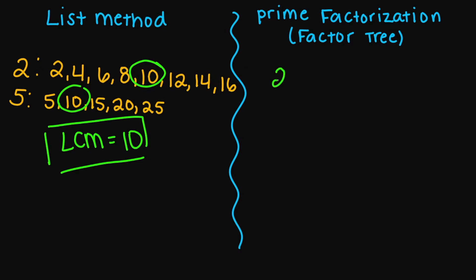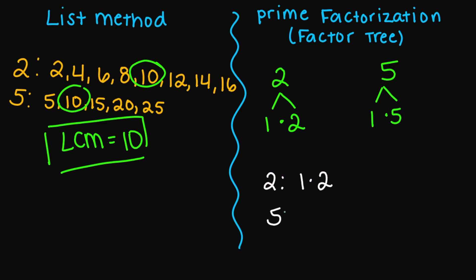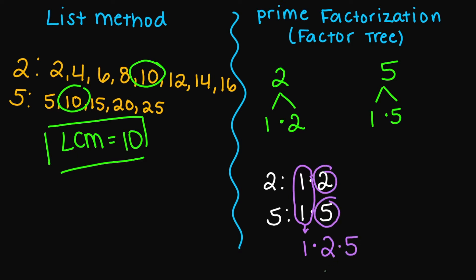So let's say you did the prime factorization method. I'm going to factor my two and my five. My two factors into one times two — cannot factor any further. And my five factors into one times five. So we have one times two for my two, and one times five for my five. I have a pair for my one, so I write it one time. The two and the five are add-ons. So one times two is two, two times five gives us 10. Your LCM using this method is also 10.